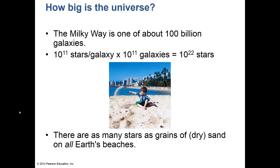Our galaxy, the Milky Way, is one of just 100 billion galaxies. When you multiply 100 billion galaxies times 200 billion stars, you get a really large number. In fact, there are as many stars in the universe as there are grains of sand on all of Earth's beaches.